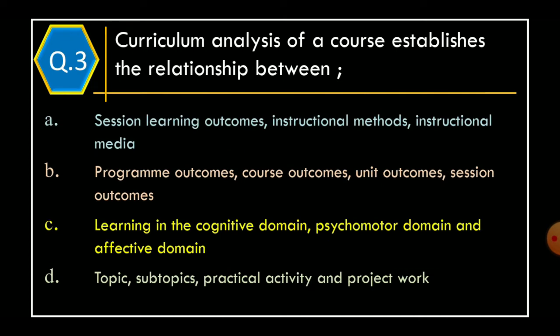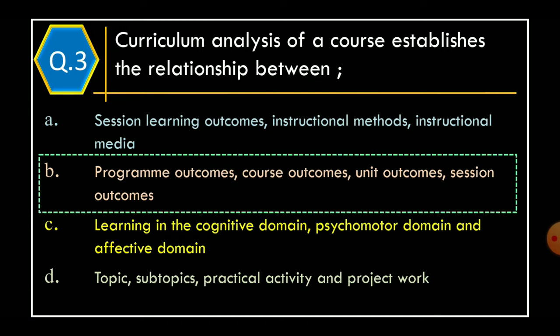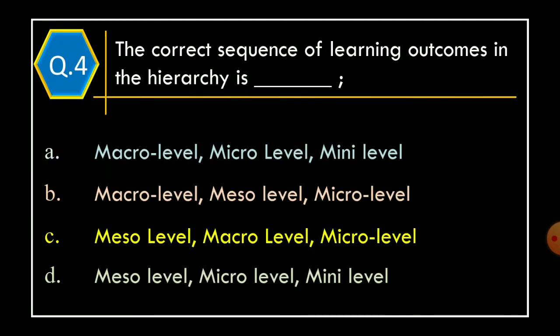Question 3: Curriculum Analysis of a Course establishes the relationship between — Option A: Session Learning Outcomes, Instructional Methods, Instructional Media; Option B: Program Outcomes, Course Outcomes, Unit Outcomes, Session Outcomes; Option C: Learning in the Cognitive Domain, Psychomotor Domain and Affective Domain; Option D: Topic, Subtopics, Practical Activity and Project Work. The correct option is Option B: Program Outcomes, Course Outcomes, Unit Outcomes, Session Outcomes.